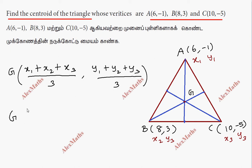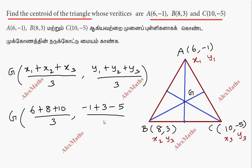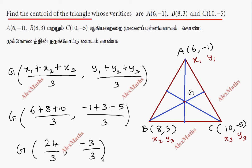Now we do direct substitution. x1 is 6, x2 is 8, x3 is 10, whole divided by 3. And y1 is -1, y2 is 3, y3 is -5, whole divided by 3. Adding the values: 6 plus 8 is 14, plus 10 is 24, divided by 3. And for y: -1 plus 3 minus 5 equals -3, so -3 divided by 3.